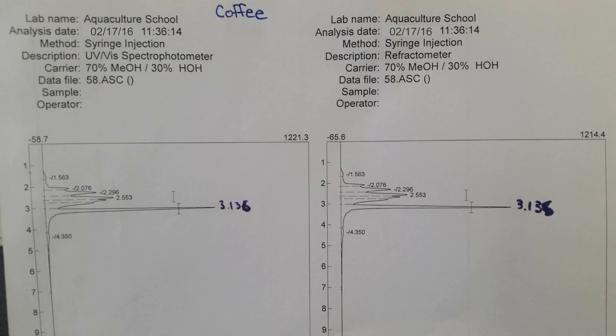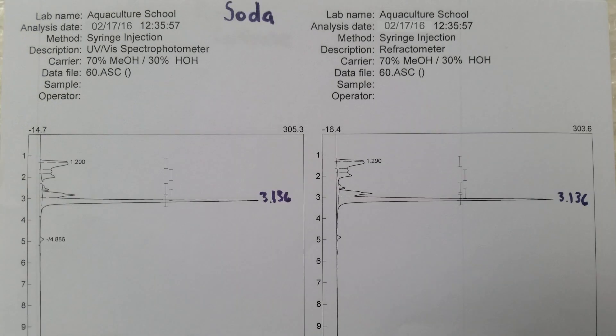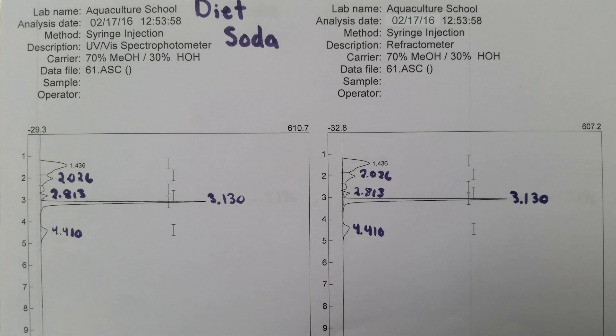In the coffee, we found there was a peak at 3.13. In the tea, the peak occurred at 3.13 again. In the soda, the peak occurred at 3.13. And then finally, the diet soda had a peak of 3.130, so same as all of them.